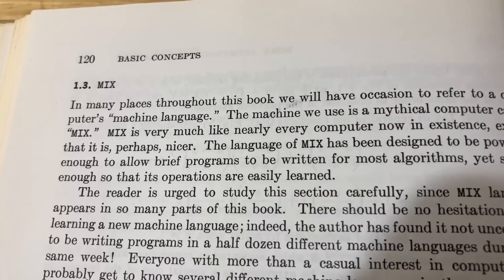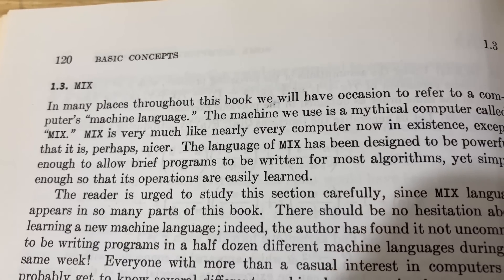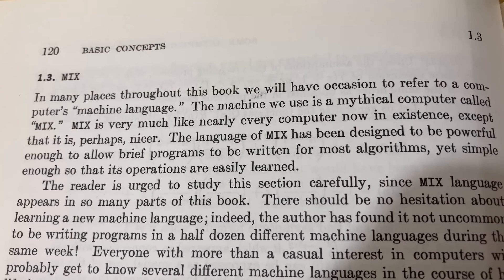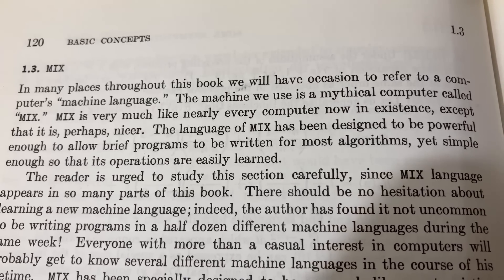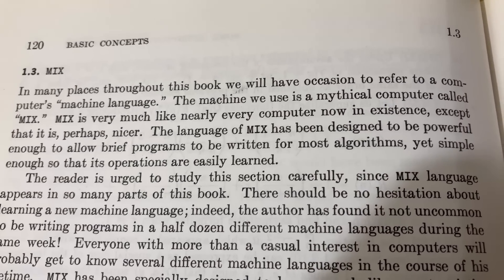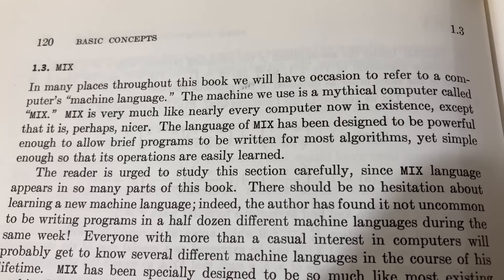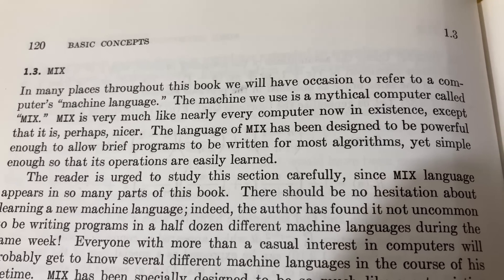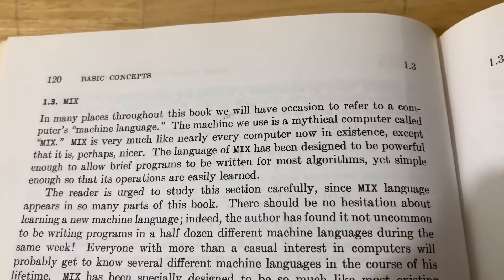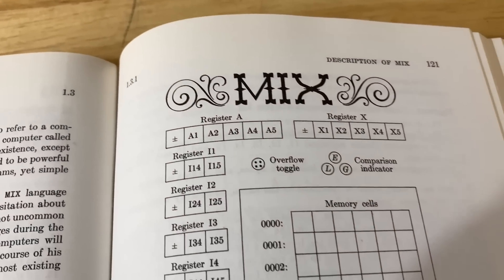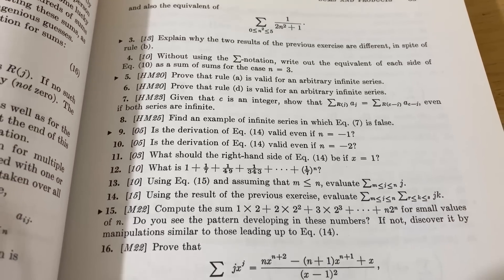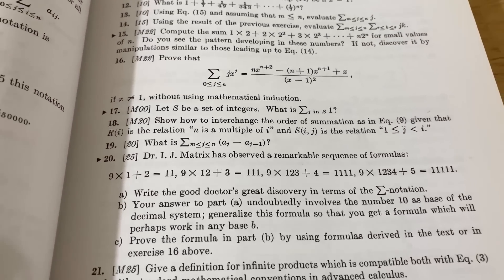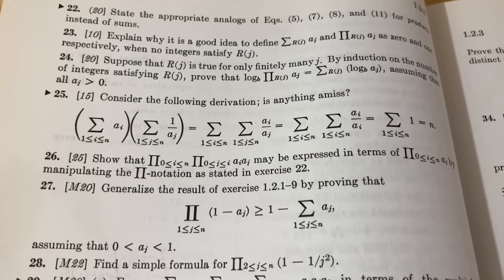He also talks about MIX, which I think is really interesting. In many places throughout this book we have occasion to refer to a computer's machine language. The machine he uses is a mythical computer called MIX. MIX is very much like nearly every computer now in existence, except that it is perhaps nicer. The language of MIX has been designed to be powerful enough to allow brief programs to be written for most algorithms, yet simple enough so that its operations are easily learned. There's also a quick look at exercises in the section on sums and products — all kinds of sums.